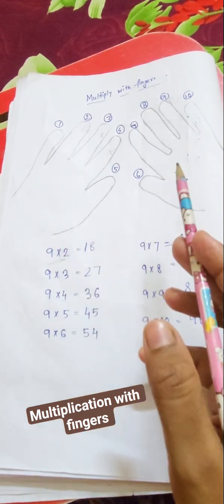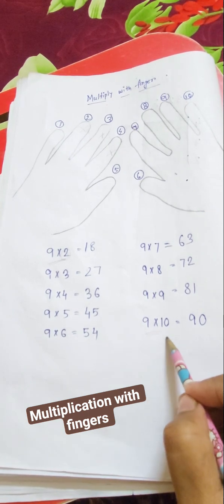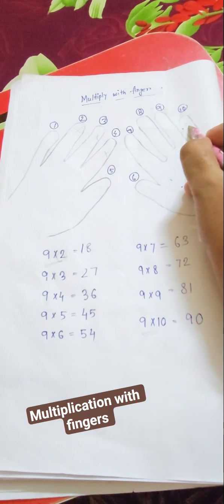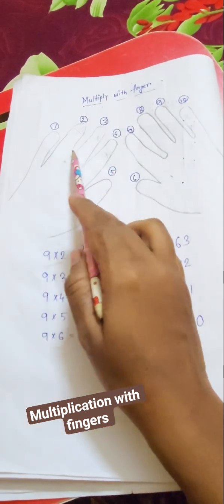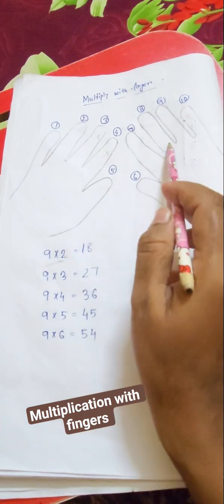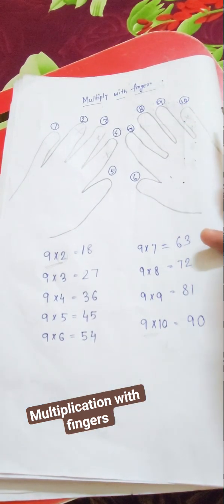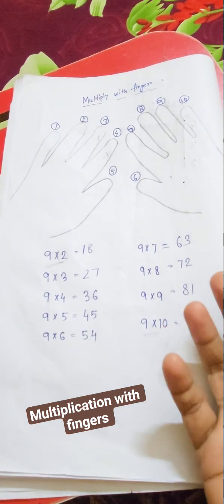And here, if we multiply 9 times 10, we have to cross 10. What do we have before? 1, 2, 3, 4, 5, 6, 7, 8, 9. And after there is nothing, so nothing means 0. That's why I have put 0 over here. That's it, thank you.